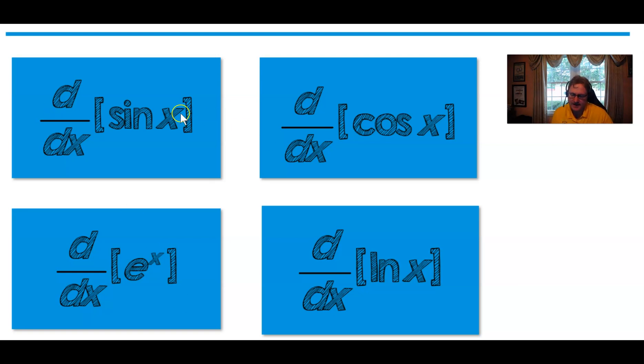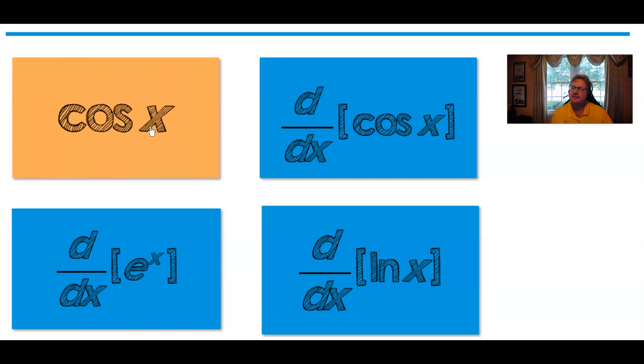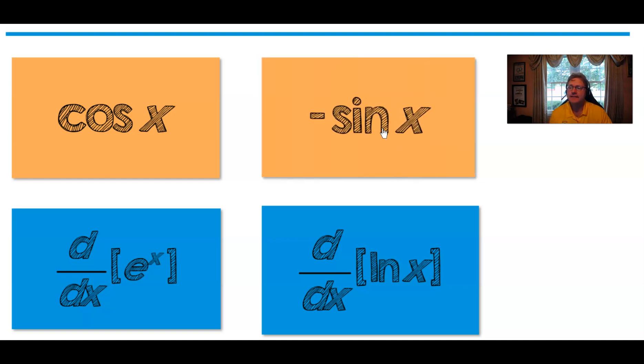So here we go. The derivative of the sine of x, folks. What is the derivative of the sine of x? The answer is cosine of x. Hopefully you got that one right. Let's move on to the derivative of cosine of x. Think about it. The answer is negative sine of x. A really good question there. Did you remember the negative sign?